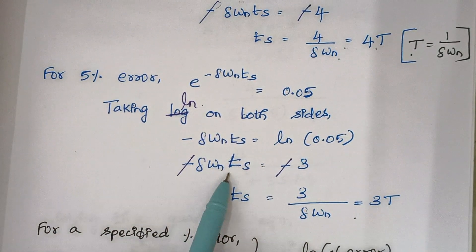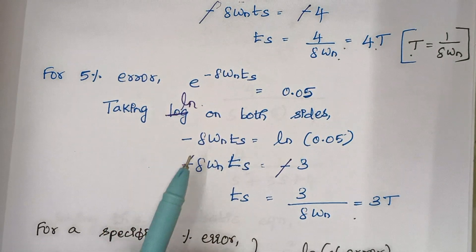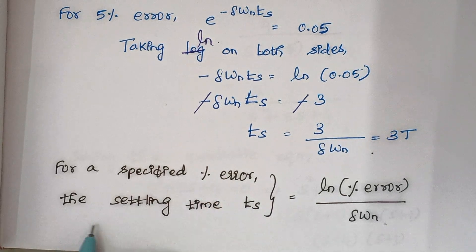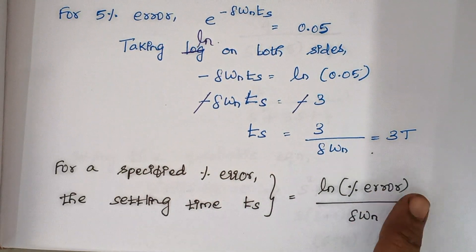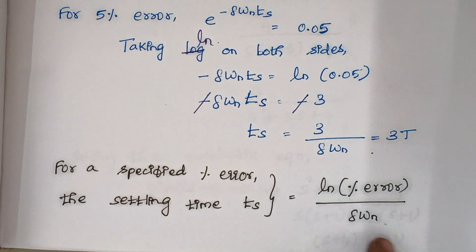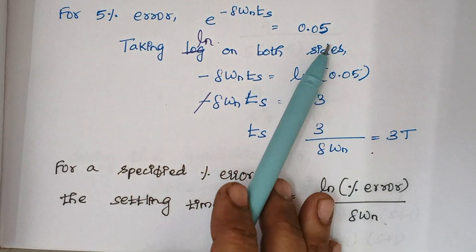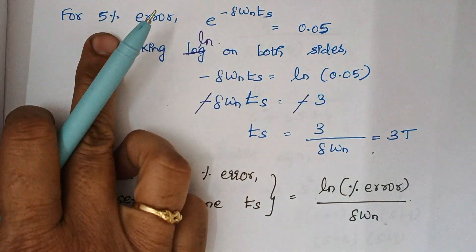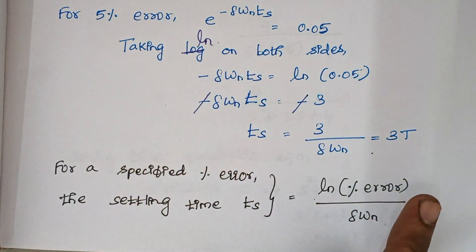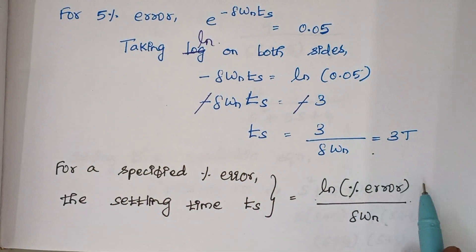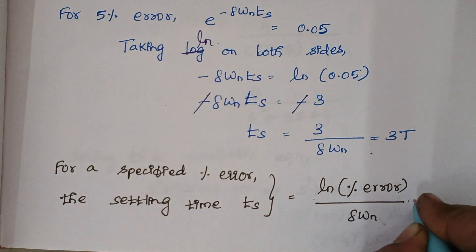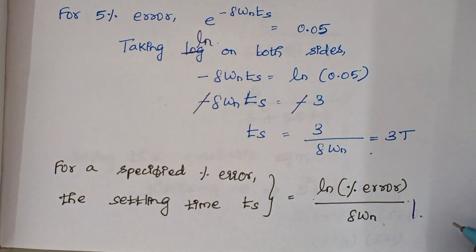So here we have calculated settling time for 2% and 5% error. The basic thing is: for a specified percentage error, the settling time can be given by ln of the percentage error divided by zeta omega_n. For example, ln(0.05) gives 3, and similarly we get the value for 2%. So the general expression is: t_s equals ln(percentage error) divided by zeta omega_n. This is the final formula for calculating the settling time.